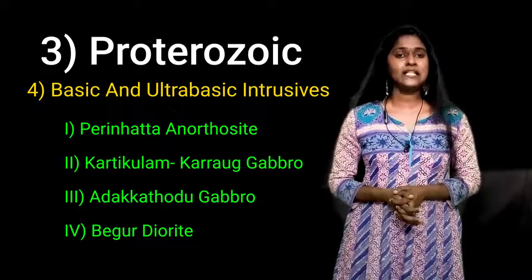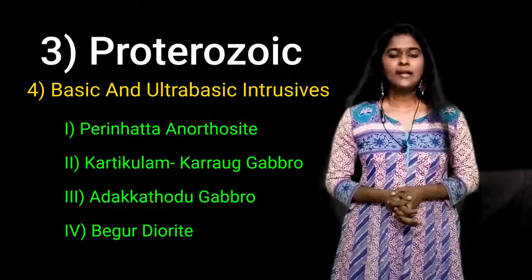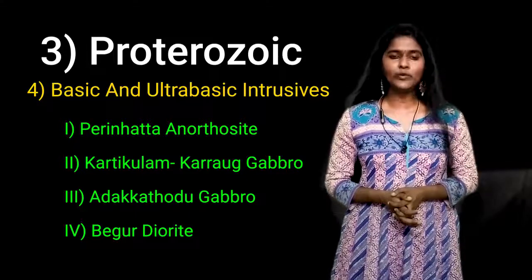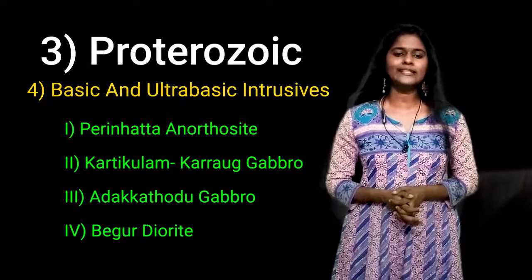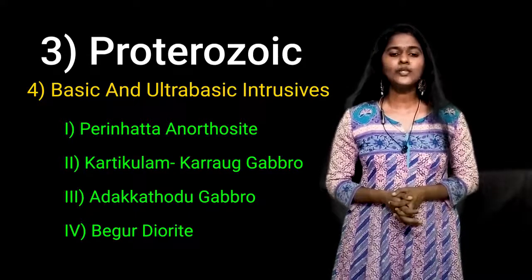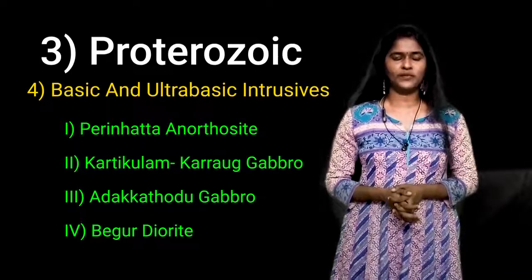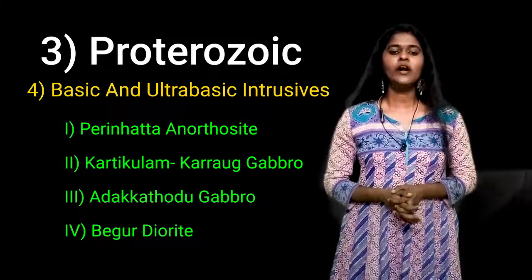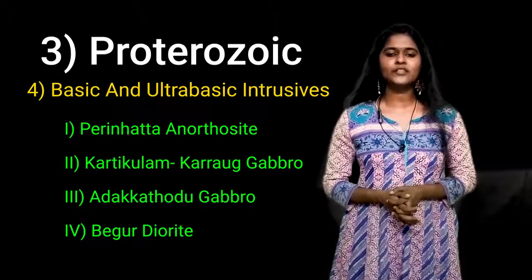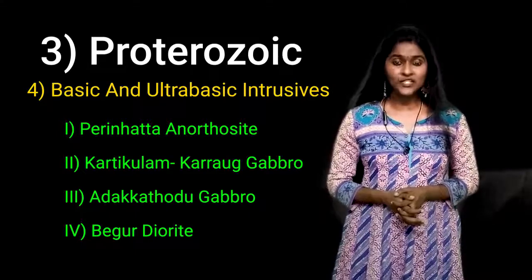The third category of basic and ultrabasic intrusives is Arakathod gabbro. It is an east-west trending 8-kilometer-long ellipsoidal gabbroic pluton. It is located at Arakathod near Mananthavady in Wayanad district. It has patches of coarse calc-silicate schist and biotite gneiss.